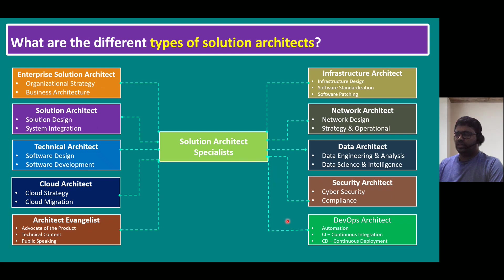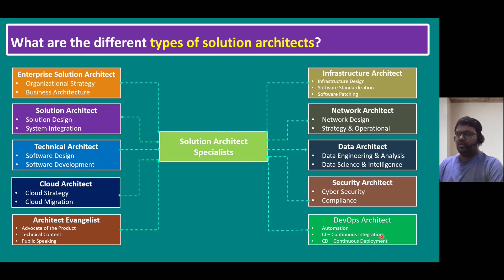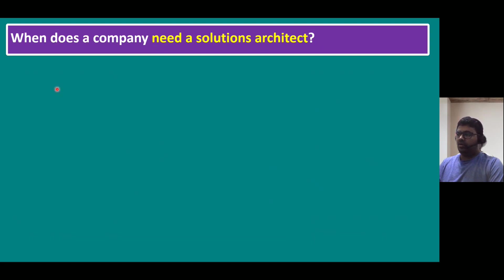You can apply for any of these roles based on your core skill set. If your core skill is public cloud — AWS, Azure, or Google Cloud — you can apply for cloud architect. If your core skill is networking, apply for network architect. If you come from a database or data science background, apply for data architect. If you're from security operations, apply for security architect. If your core skill is application development, try for a DevOps architect role. The next level above solution architect is enterprise solution architect.